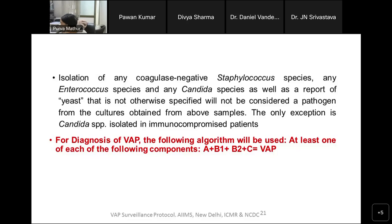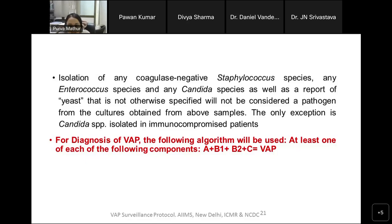Regarding why coagulase-negative staph, Candida, and Enterococcus are excluded: they are all well-known upper respiratory colonizers. You will not see coagulase-negative staph, Enterococcus, or Candida species causing ventilator-associated pneumonia — they are upper respiratory colonizers and therefore must be excluded.